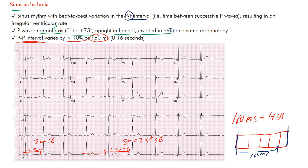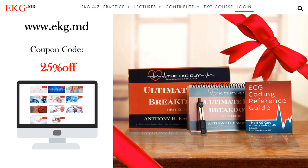Let's review: sinus arrhythmia is a beat-to-beat variation giving a regularly irregular rhythm — irregular, but with some regularity overall. The P-to-P interval varies between successive beats, resulting in an irregular ventricular rate. Sinus rhythm is confirmed by consistent P wave morphology, normal axis, and appropriate upright/inverted P waves in the expected leads. The P-to-P interval varies by more than 10% or 160 milliseconds — which equals four small boxes, or 0.16 seconds.